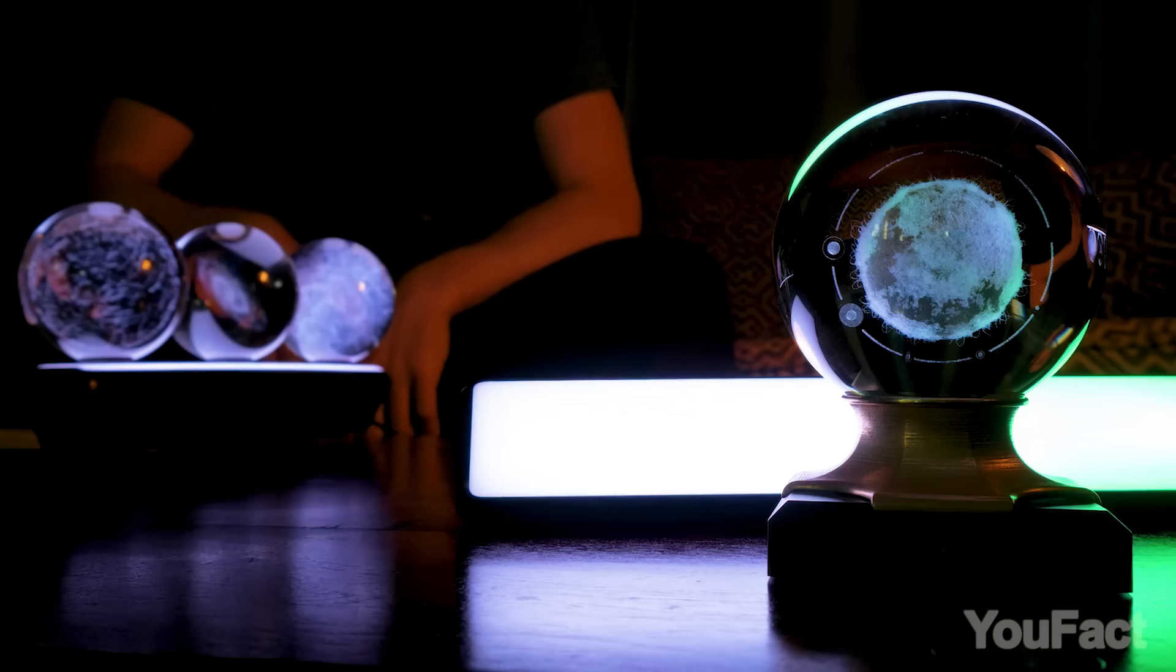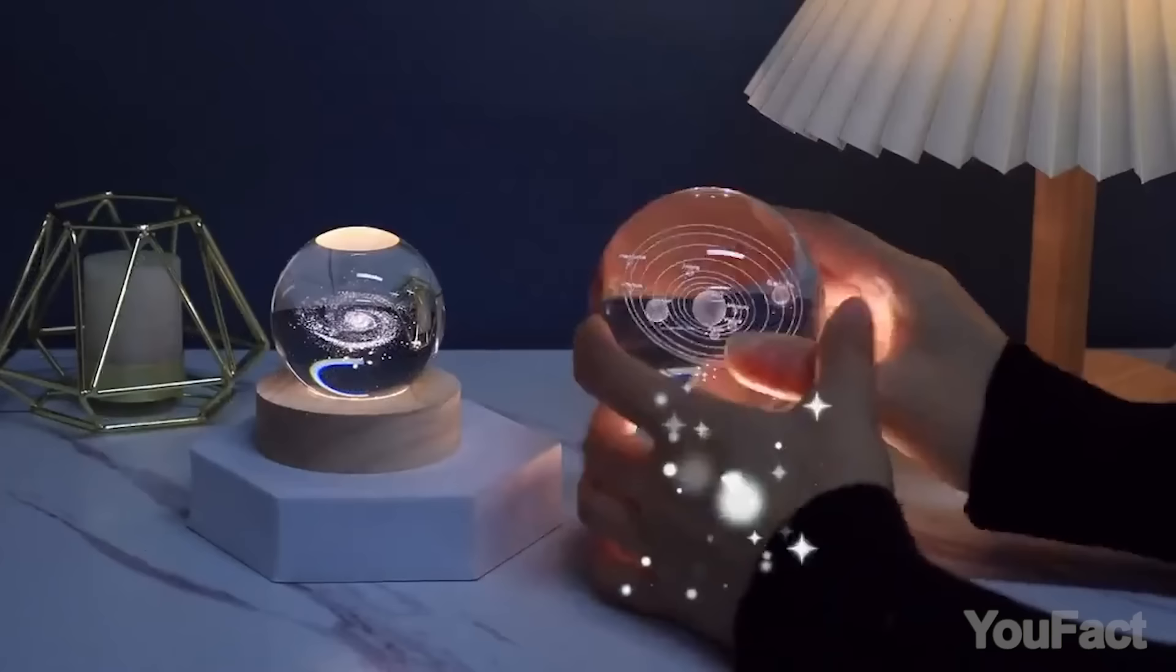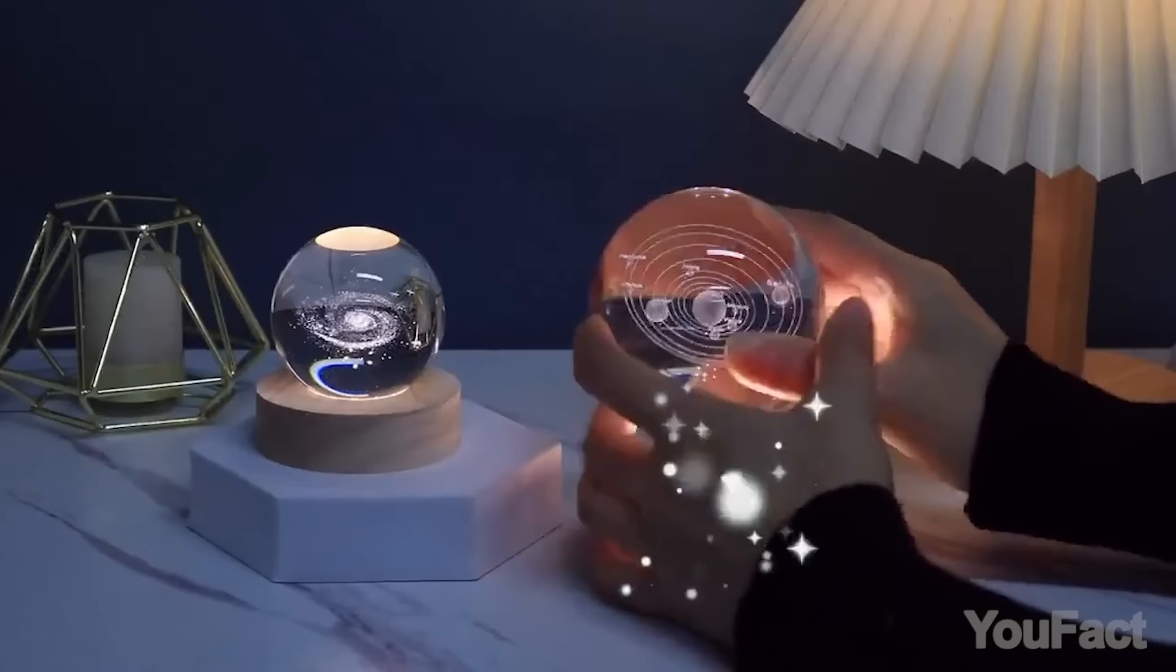On top of that, you get an LED lighting system that supports various colors. There are also some dynamic light modes for quick and slow flashing. Now check if you remember the right order of the planets.